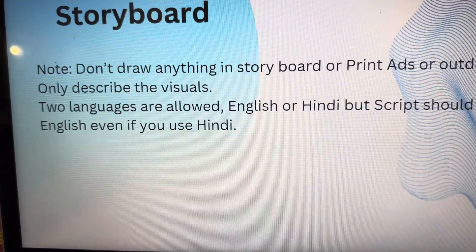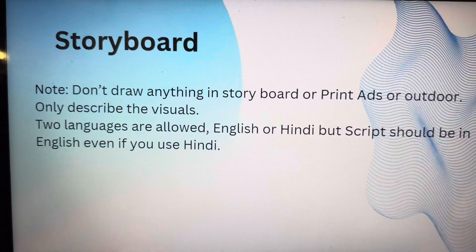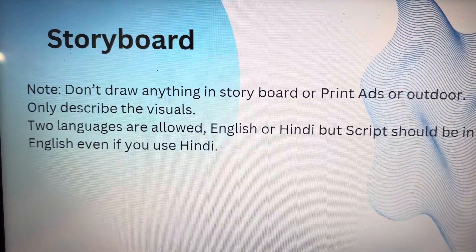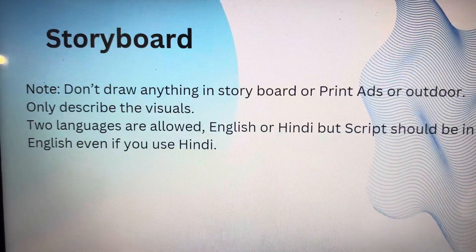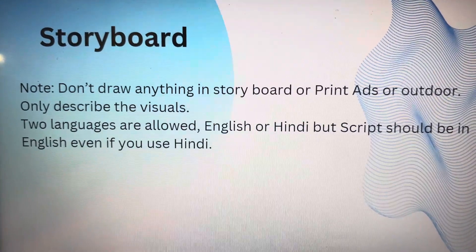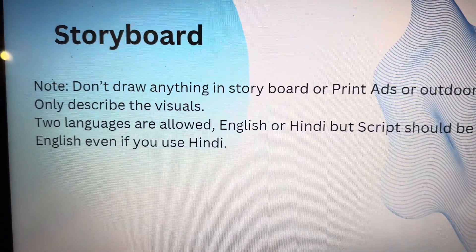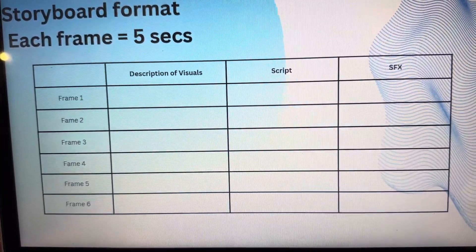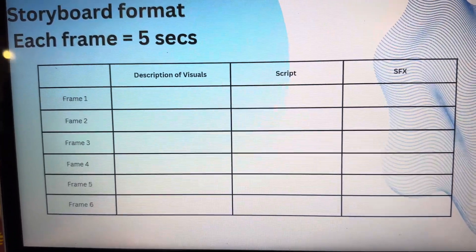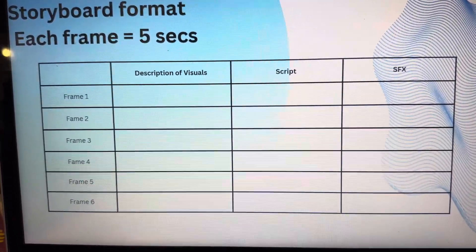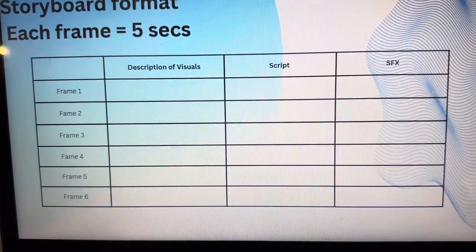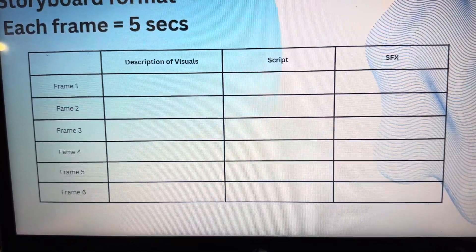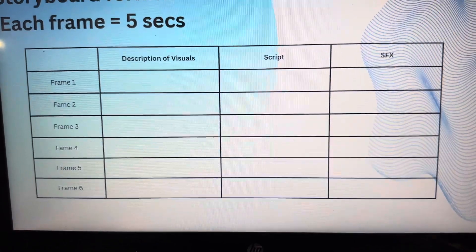We then move on to the storyboard. No drawings are required — you just need to put down whatever you think is relevant. You can write in English or Hindi, but the script should be in English script, not Devanagari. For the format, if each frame equals five seconds, then in six frames you have 30 seconds. You can also make a separate column mentioning five seconds in each row. For each frame, describe the visuals, write the script that is going to be spoken, and if there is any sound effect, mention that in the last column.